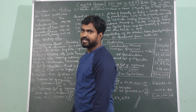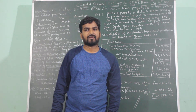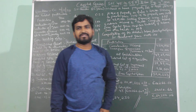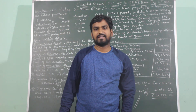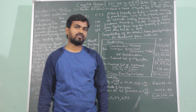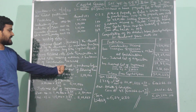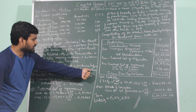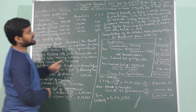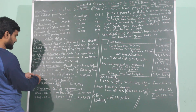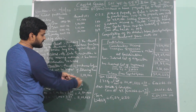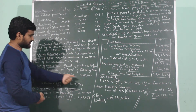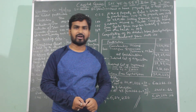From net consideration, we subtract indexed cost of acquisition and indexed cost of improvement. For cost of acquisition: Mr. Nayadu purchased the property for Rs. 9,100, but this was before the year 2001. When the asset has been acquired before 1st April 2001, the cost of acquisition will be the higher of: (a) actual cost — Rs. 9,100, and (b) fair market value as on 1st April 2001 — Rs. 3 lakhs. Comparing these two, Rs. 3 lakhs is higher, so Rs. 3 lakhs becomes the cost of acquisition.